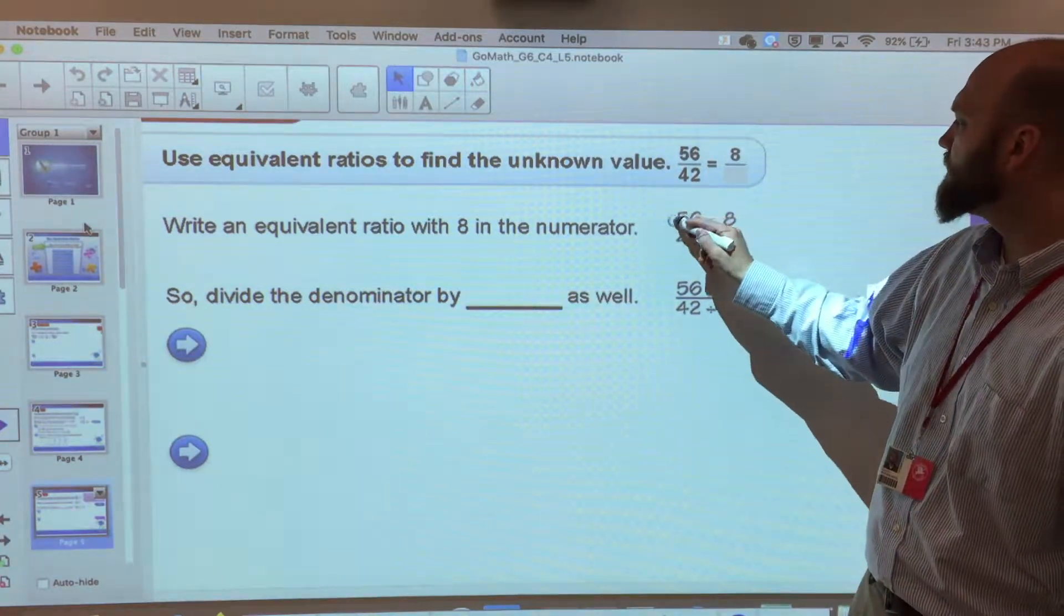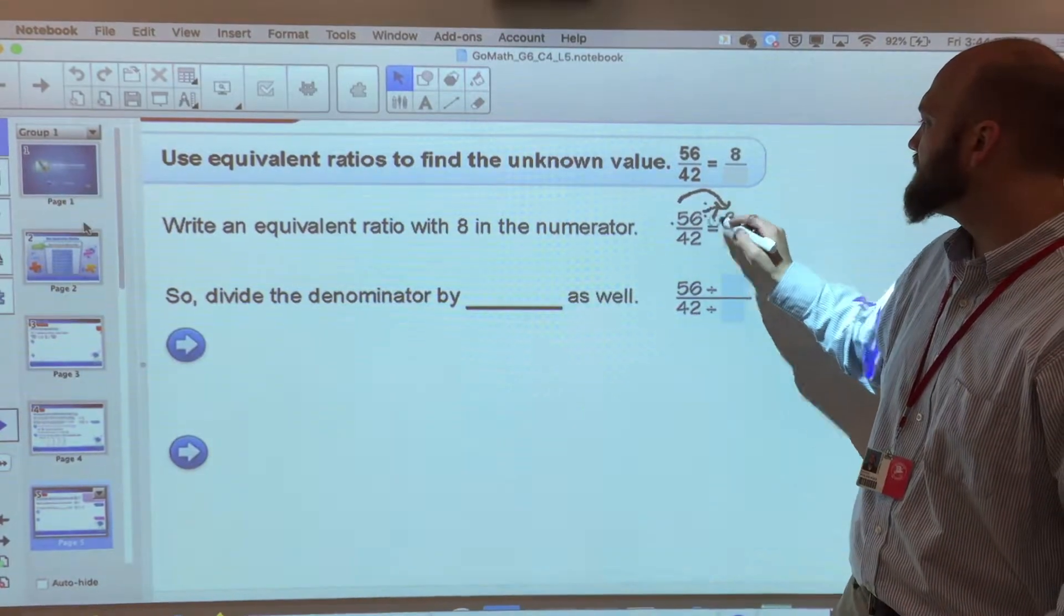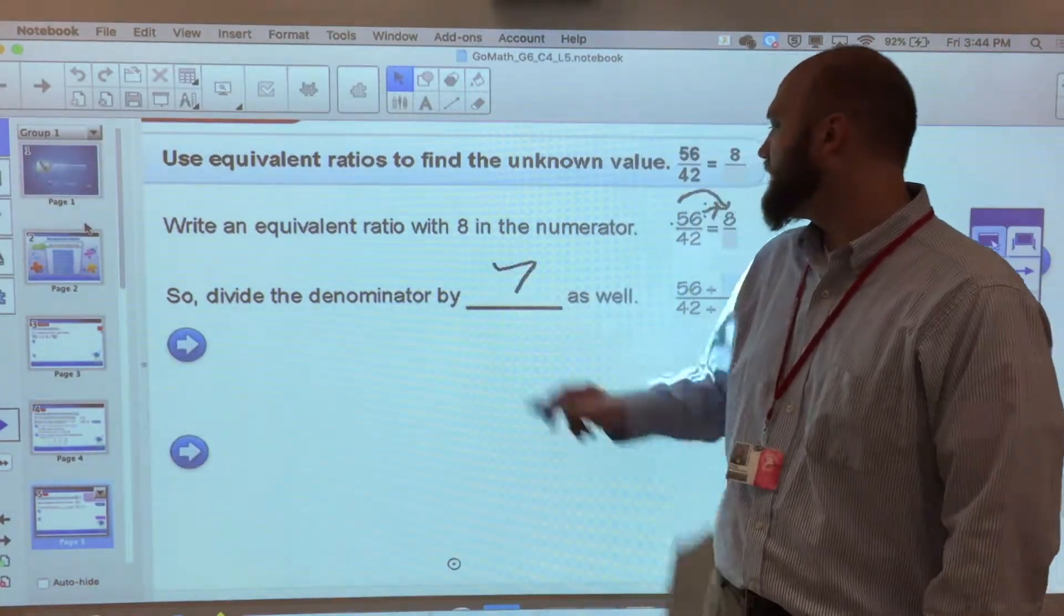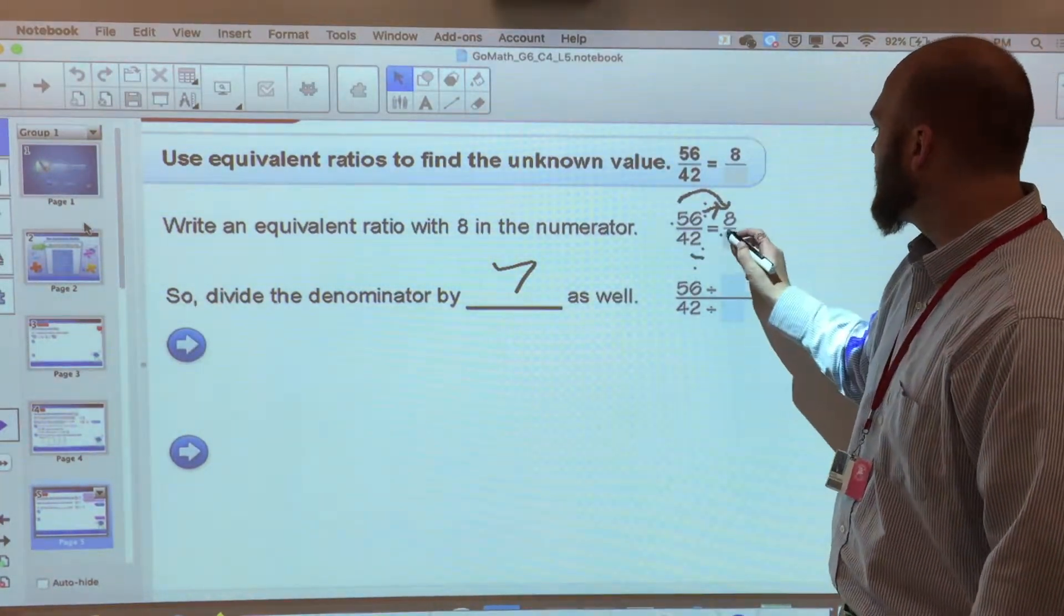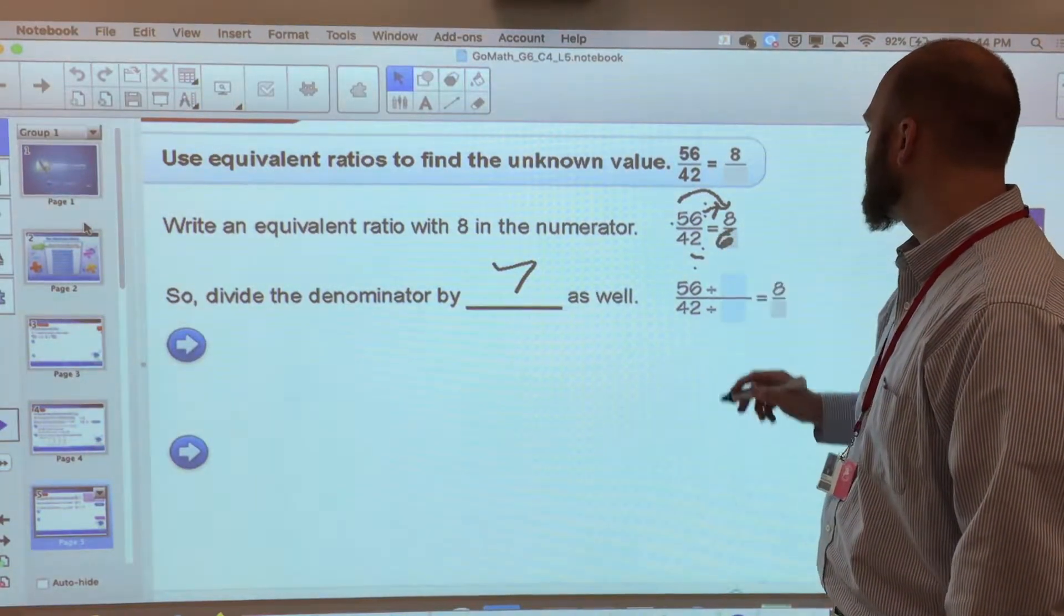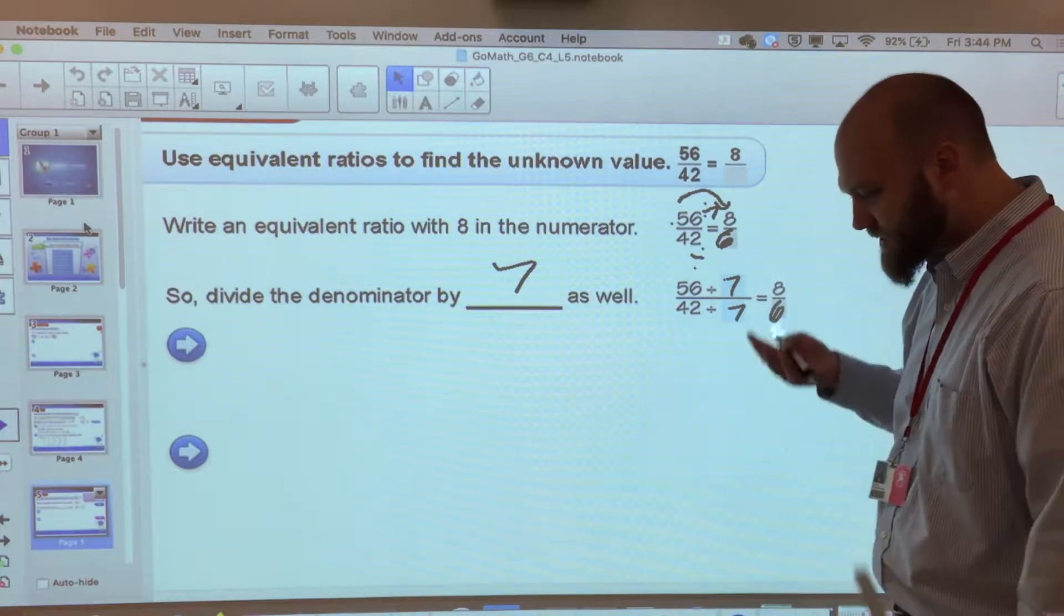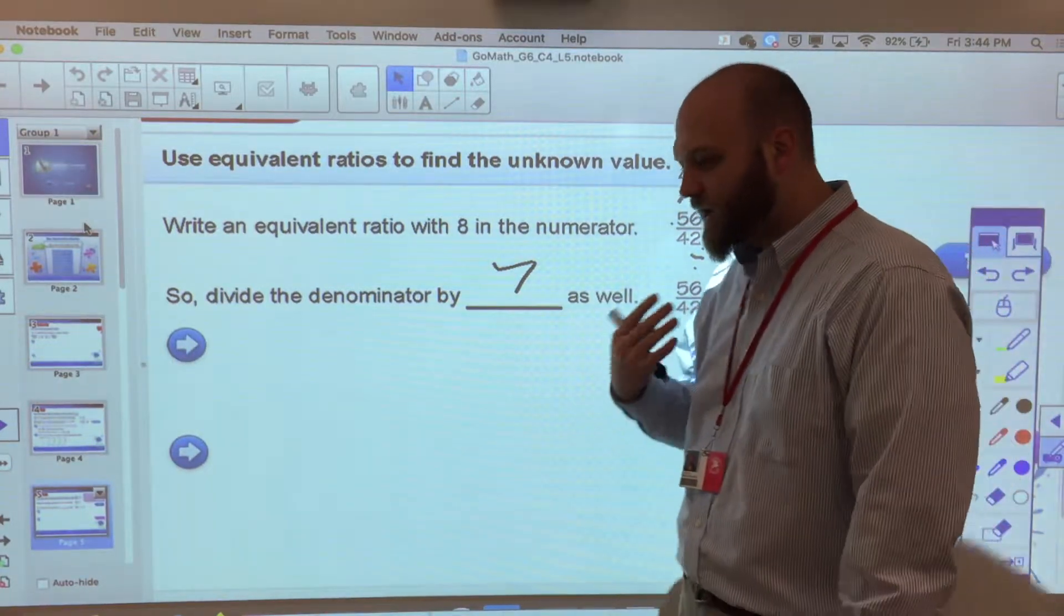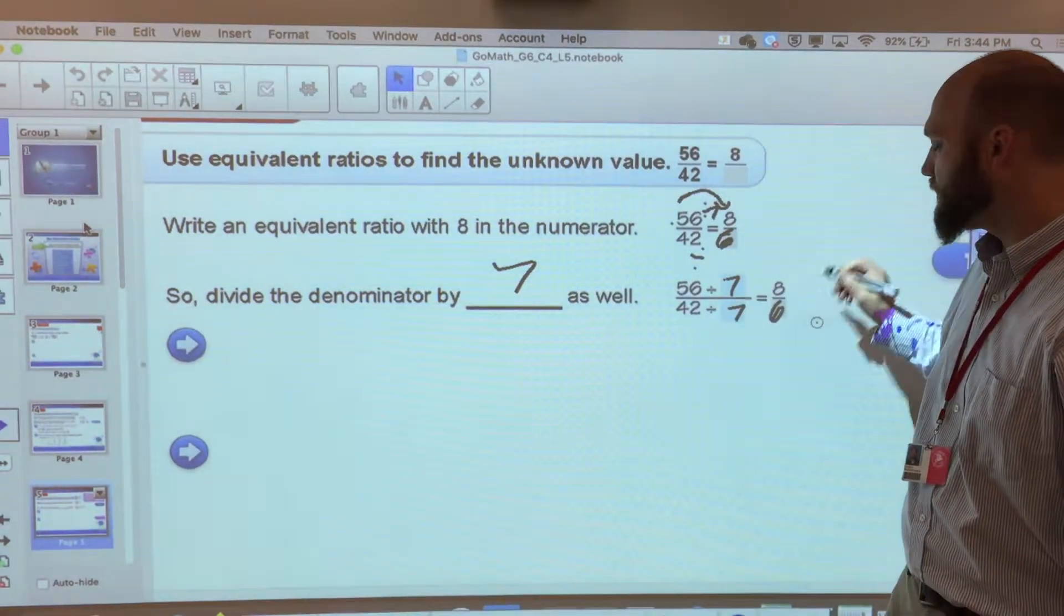Well understand that if I'm going from 56 to 8 over here, I'm going to be dividing by 7. So we're going to divide the denominator by 7 as well. So whatever I do to the top, I have to do the bottom and 42 divided by 7 will give me 6. So again, when I'm dividing each by 7, I would get 6. So what this would coincide with is if we need something along the lines of an 8 to 6 ratio, which would again simplify down to a 3 to 4 ratio.